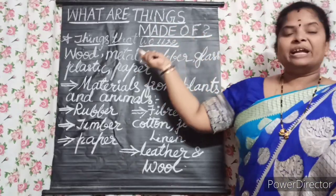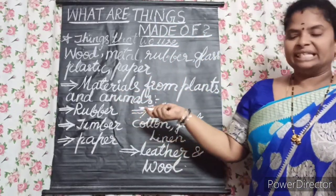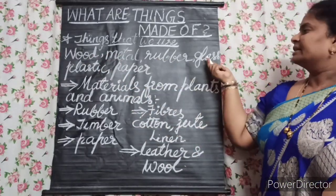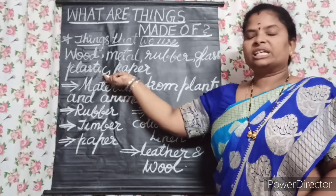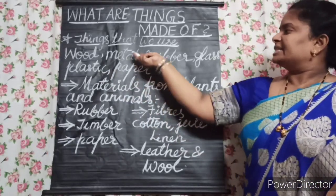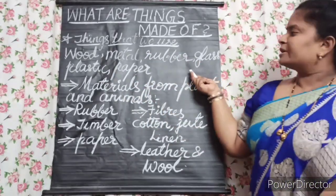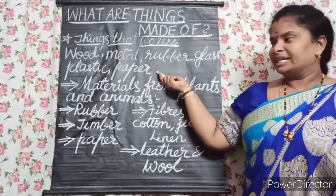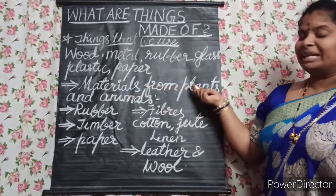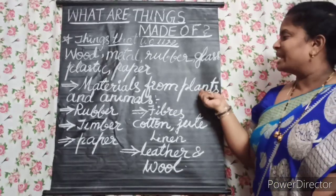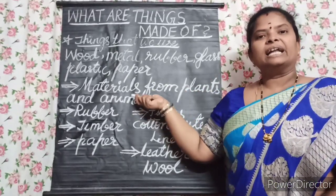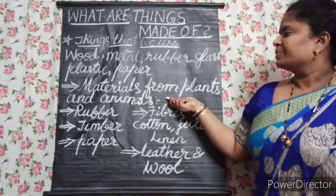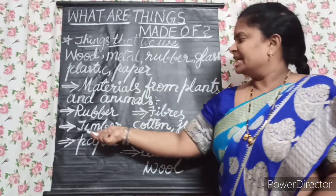Things are made from different materials like wood, metal, rubber, glass, plastic, and paper. Most of these materials we get from nature — some from plants and animals, and some from the earth.